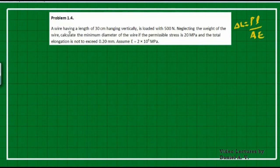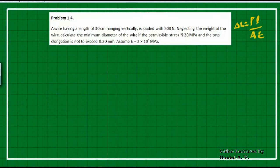A wire having a length of 30 centimeters is hanging vertically and loaded with 500 Newton. Neglecting the weight of the wire, calculate the minimum diameter if the permissible stress is 20 mega Pascal, the total elongation is not to exceed 0.2 mm, and E equals 2 times 10 to the power 5 mega Pascal.